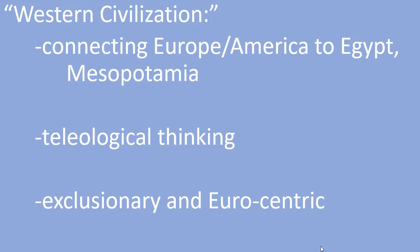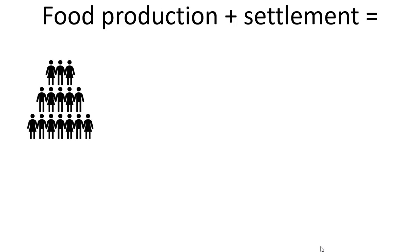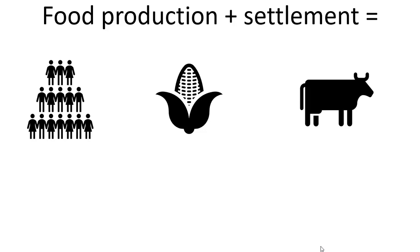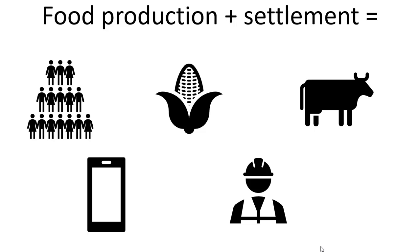Despite the problems of defining what a civilization really is, the results of food production and settling down were pretty clear. Human population increased, food security could be achieved as people learned to store excess food for future uses, and labor and resources from domesticated animals like sheep and goats became available. Labor specialization began as not everyone was needed to produce food, and people could begin doing other things — like specializing in fighting to protect the society or making various items to trade with other cities.